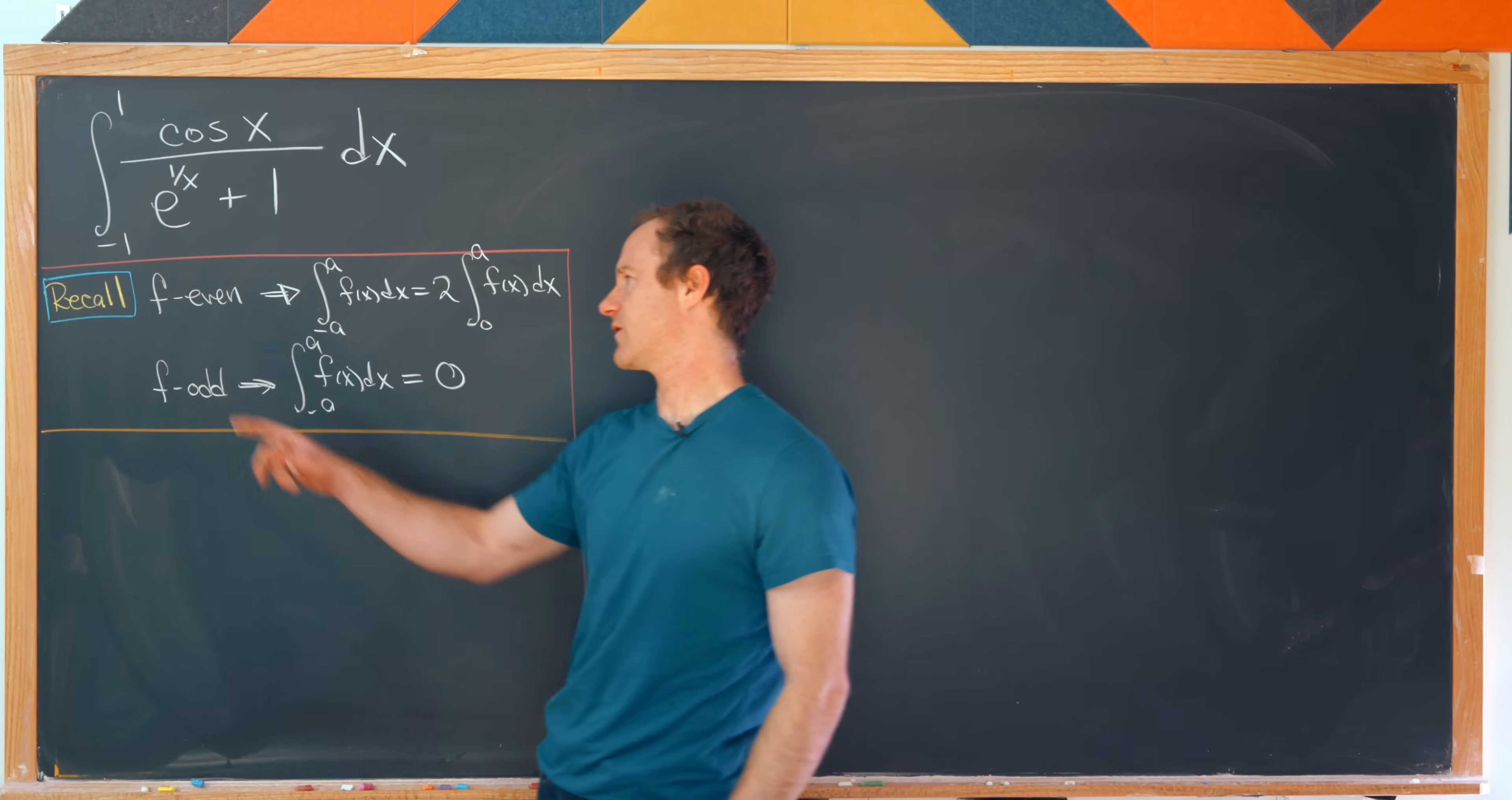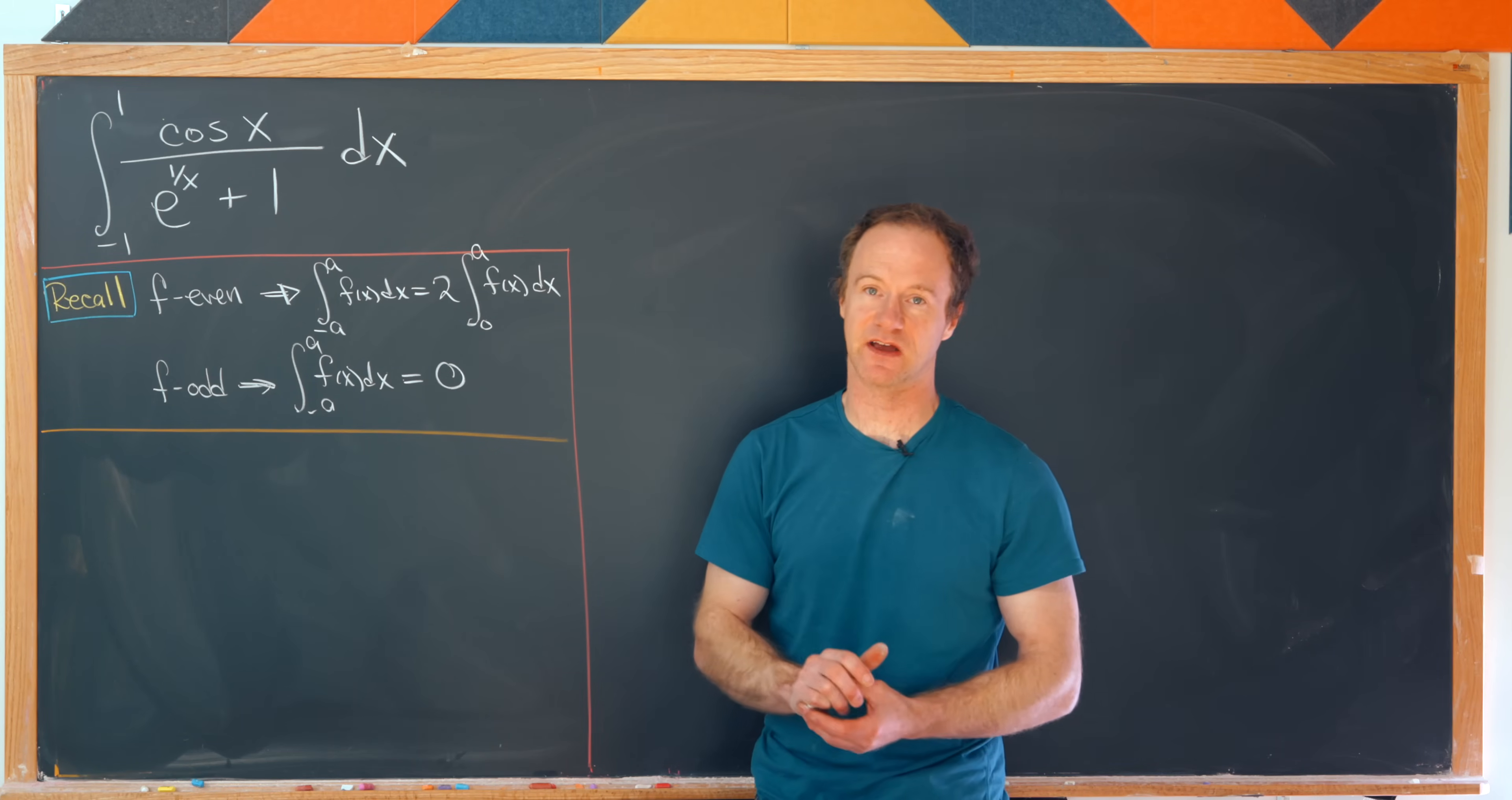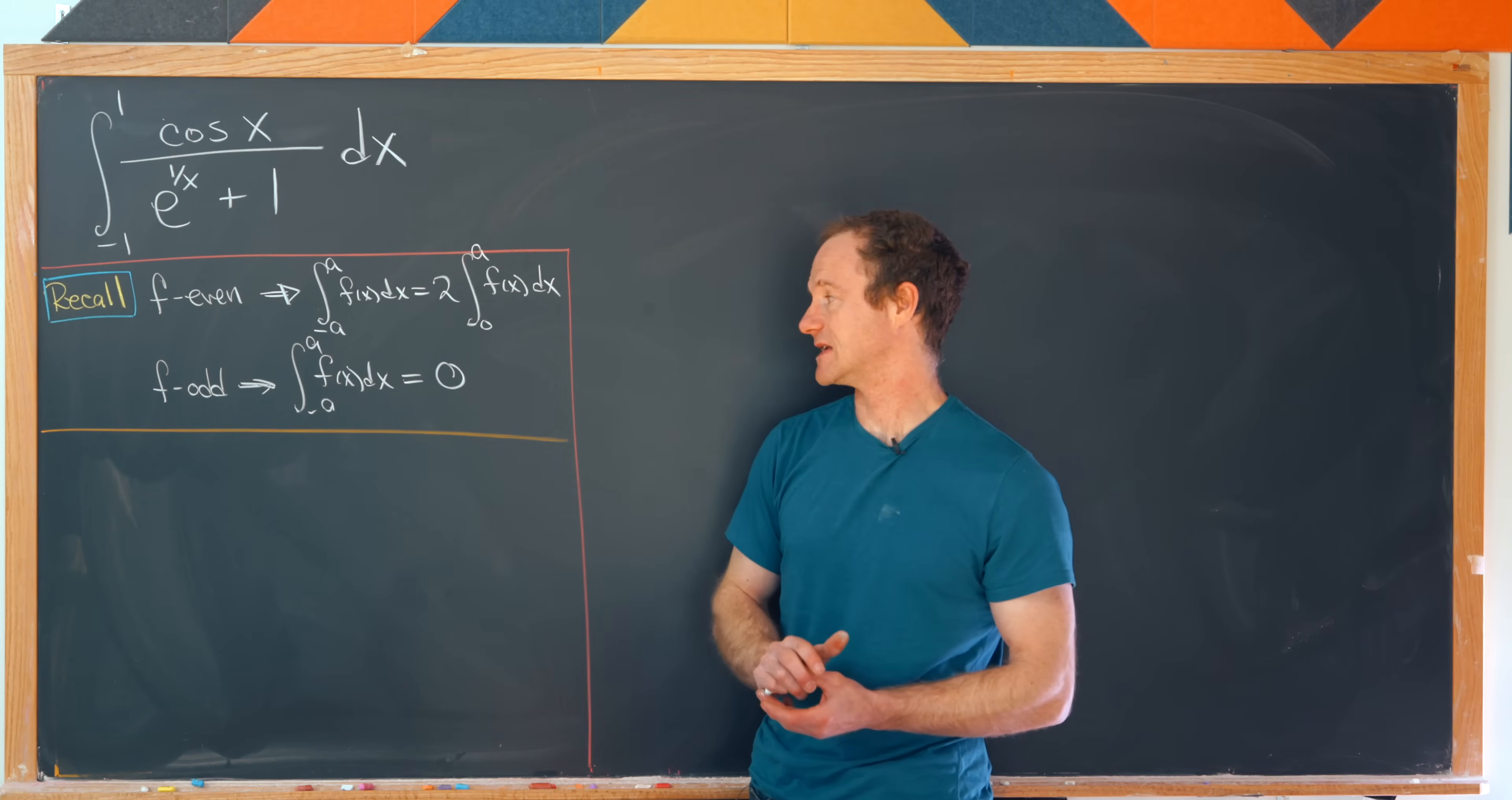So let's recall if a function f is even, then the integral from minus a to a of f of x dx is equal to twice the integral from 0 to a of f of x dx. So that's something you would generally learn in an integral calculus class. And then there's a corresponding result which says that if f is odd, then the integral from minus a to a of f of x dx is 0.